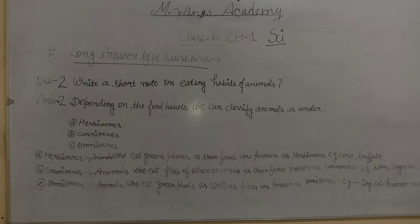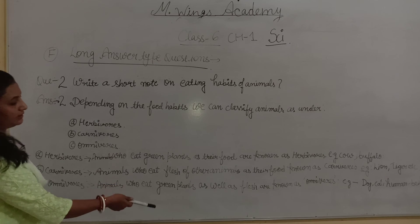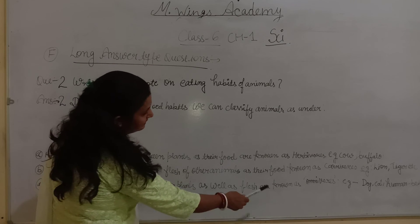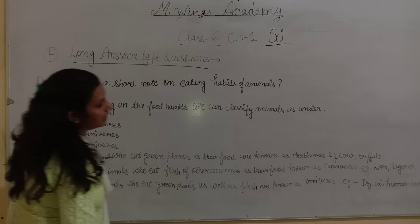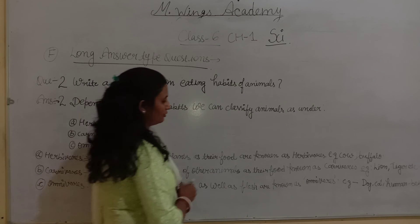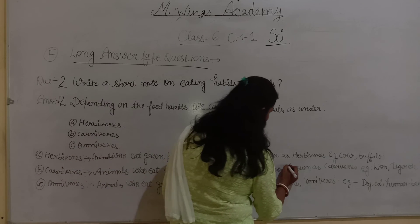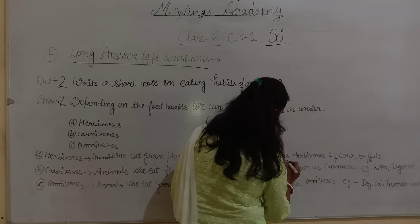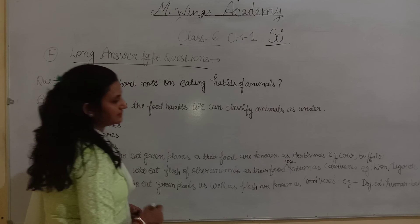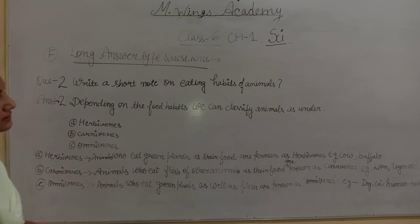Carnivorous — what do you say? Animals who eat the flesh of other animals as their food are known as carnivorous. Examples are lion, tiger, etc.